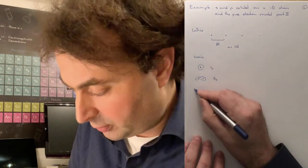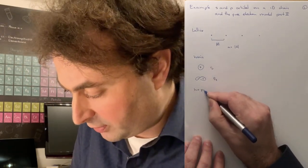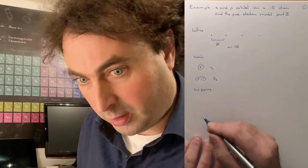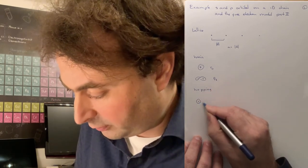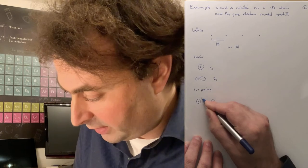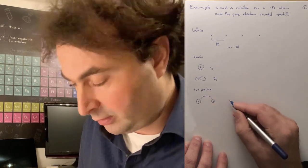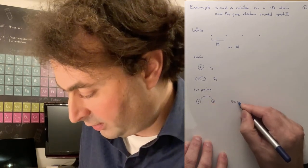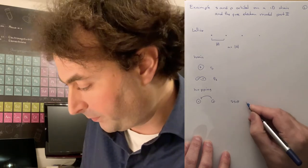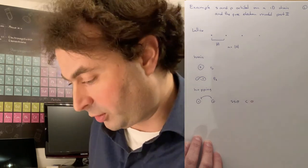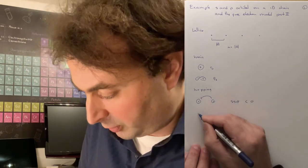Let's have a look at our hopping matrix elements. We can hop from the s orbital to the s orbital, which is the integral ss sigma. And what we saw before, ss sigma is smaller than zero.